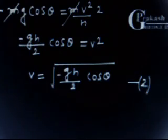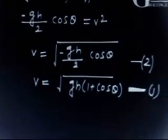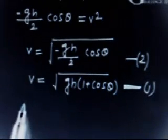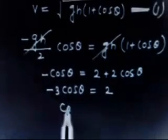Equating Equation 1 and Equation 2: gh(1 + cosθ) = gh/2·cosθ (with negative sign). Cancelling gh: minus cosθ equals 2 plus 2cosθ, giving minus 3cosθ equals 2, so cosθ equals minus 2/3.